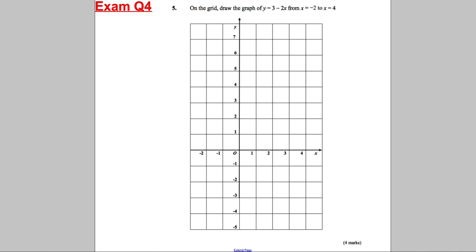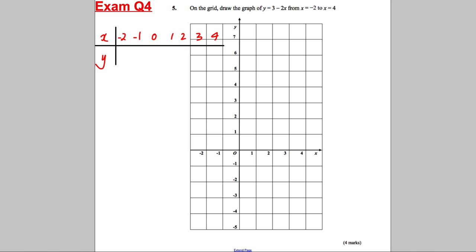Next one — pause, have a go. You might have found this one slightly more difficult because it's got negatives, but same principle. Draw a table: x and y, going from negative 2 to 4. Start with 0: 2 × 0 = 0, 3 take away 0 is 3. 2 × 1 = 2, 3 take away 2 is 1. 2 × 2 = 4, 3 take away 4 is negative 1. As you go along, it's going down in 2s — so the next ones are negative 3, negative 5. Going back, it must go up in 2s: so 5, then 7. Now just plot them.